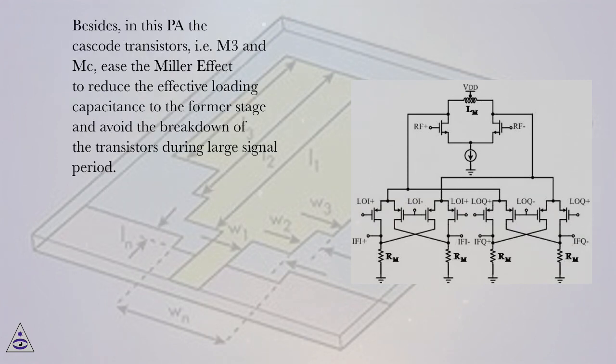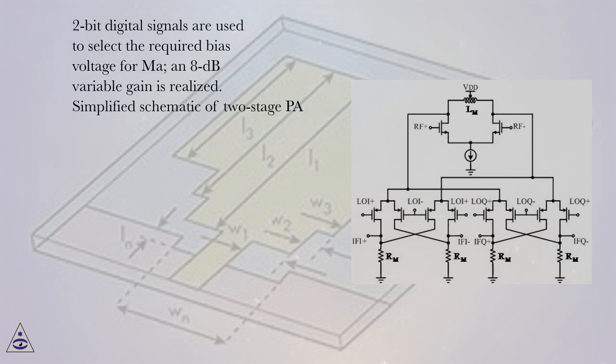Besides, in this PA the cascode transistors, i.e. M3 and MC, ease the Miller effect to reduce the effective loading capacitance to the former stage and avoid the breakdown of the transistors during large signal period. 2-bit digital signals are used to select the required bias voltage for MA, an 8 dB variable gain is realized. Simplified schematic of 2-stage PA.